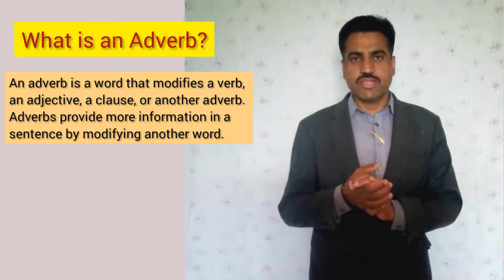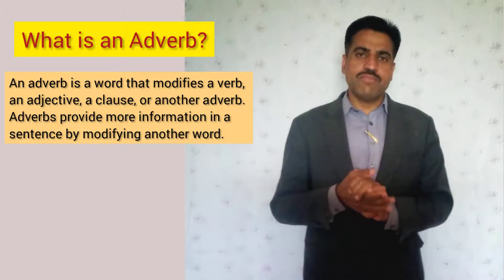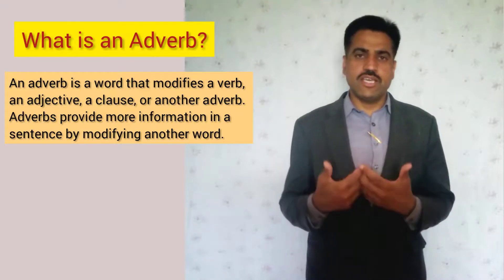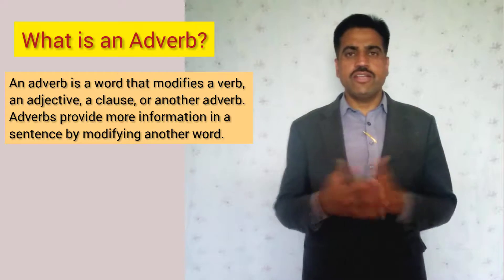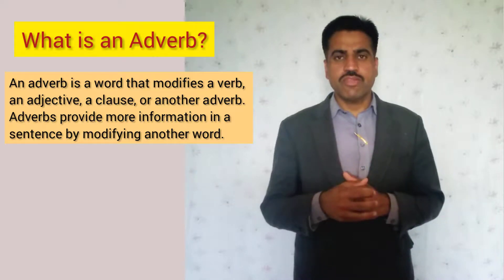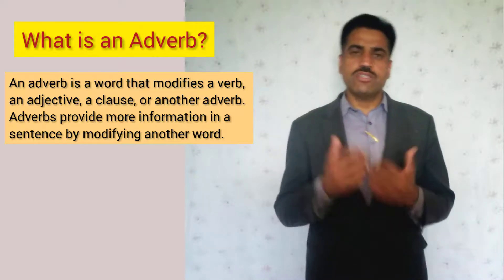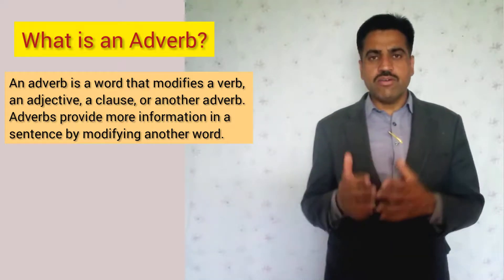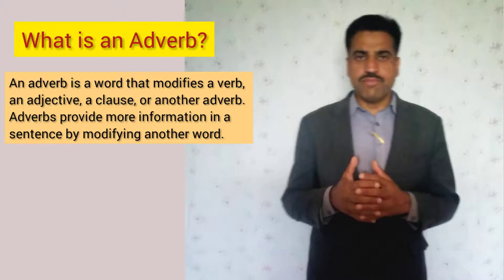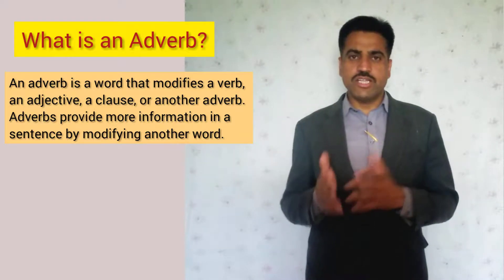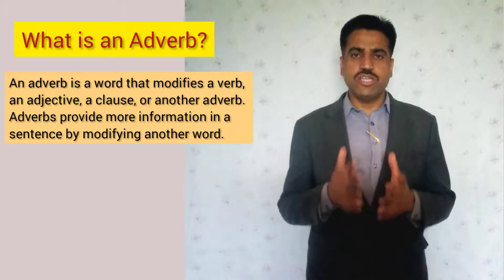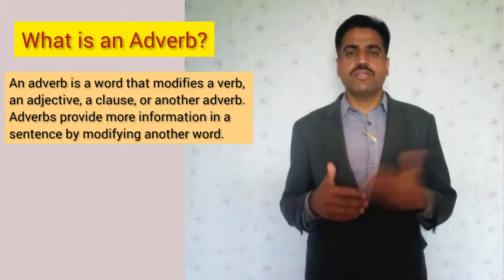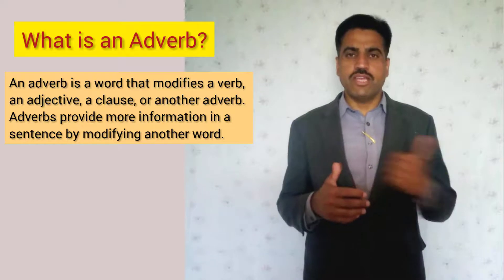For example, when I say 'he ran quickly' or 'he ran slowly,' in this example both words — quickly and slowly — tell us about the verb 'ran.'